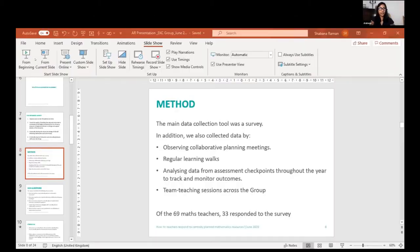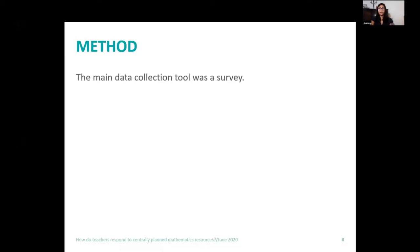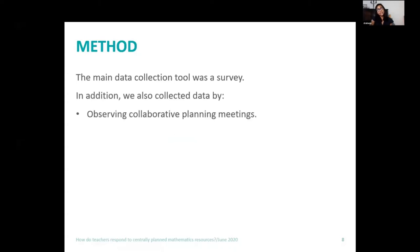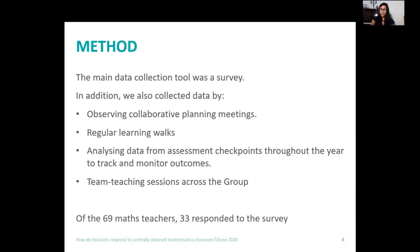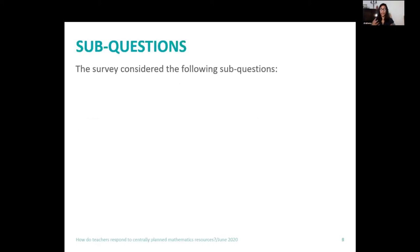Thank you, Sarah. I'm now going to talk about the method we used and what the research actually involved, as well as the outcomes. The main method of research was a survey shared across all five — now six — colleges, with Ashford not part of the group when we started collecting data in January. In addition, we used collaborative planning meetings, learning walks, assessment checkpoint data, and team teaching sessions across the group.